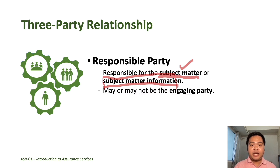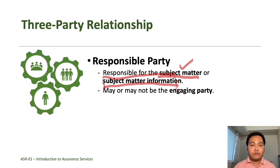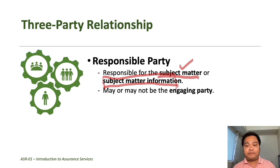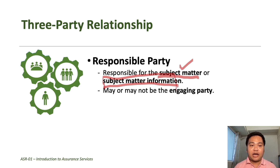The responsible party may or may not be the engaging party — the one who hires the practitioner. In an audit of financial statements, the company that prepared the financial statements is the responsible party and is also the one who hires the independent or external auditor, so in that case the responsible party is also the engaging party. However, in some assurance engagements, it is possible that the practitioner may be hired directly by the users or a party other than the responsible party, making the responsible party different from the engaging party.